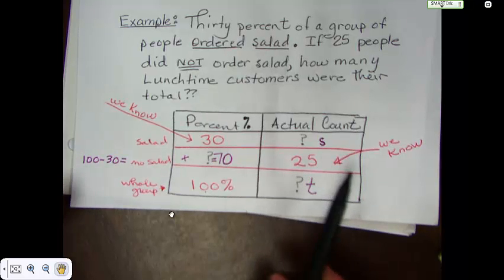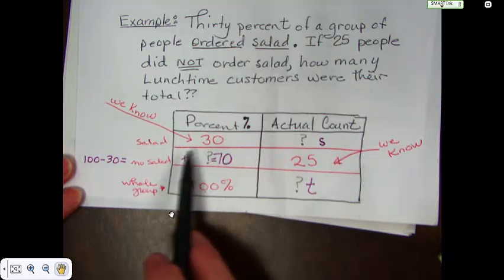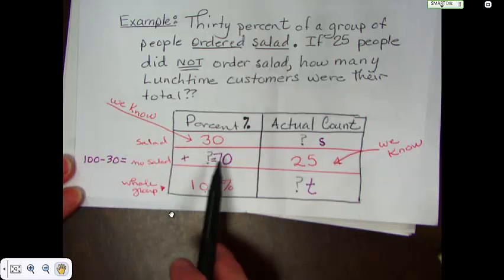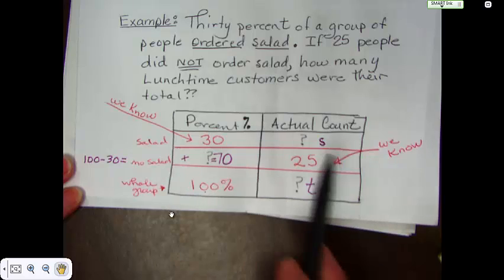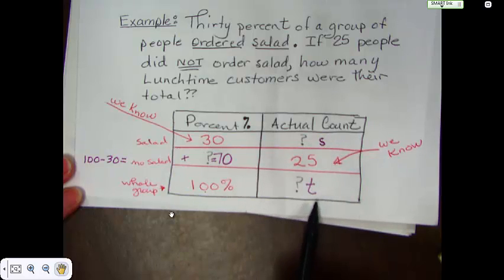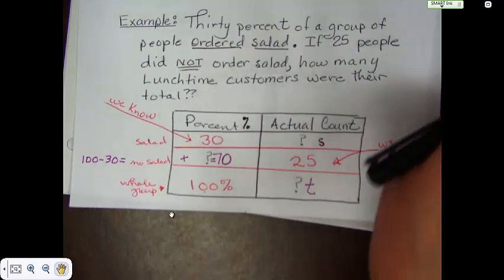Now, before we do too much, we can find out this amount here, because all we have to do is take 100 minus 30, and we get to 70. We don't know the number of people who ate salad, and we don't know the total number of people. So that's what we're going to have to solve for, and that's really a pretty easy process.